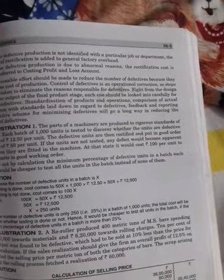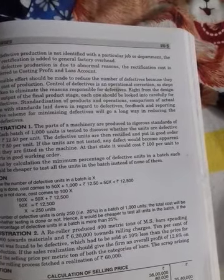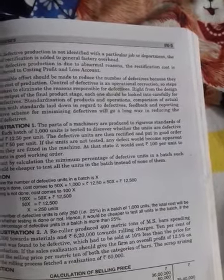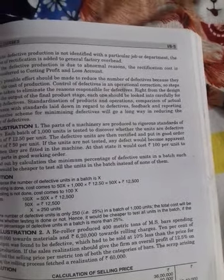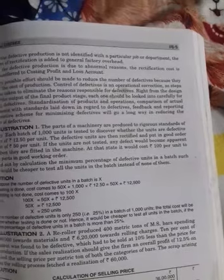First, testing is done. There are 1000 units given. Cost is 50, so 50 times 1000. Defective units have a cost of 12.50.